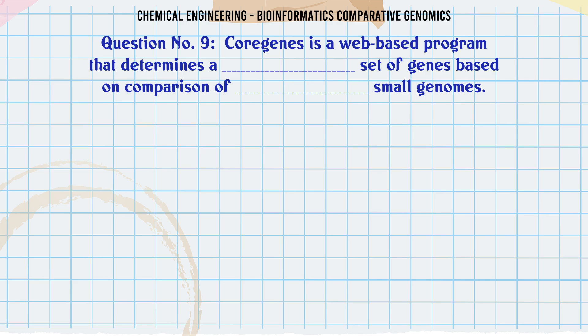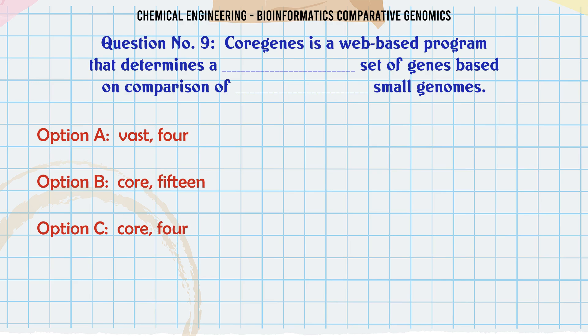CoreGens is a web-based program that determines a set of genes based on comparison of small genomes. a. VAST4. b. Core15. c. Core4. d. VAST15.